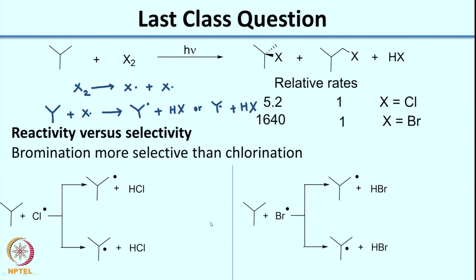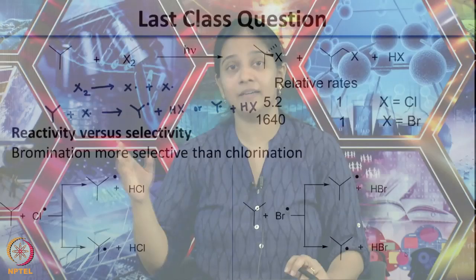In the case of Cl, the alkane can generate either a primary or tertiary radical, and the same is true for Br. Based on what you have studied earlier, the tertiary radical is more stable. But what is interesting is that in one case you have a selectivity of 5.2 to 1 for the tertiary radical, whereas in the second case you have a much larger selectivity of 1640 to 1. So this is a huge difference in selectivity - why is that the case?